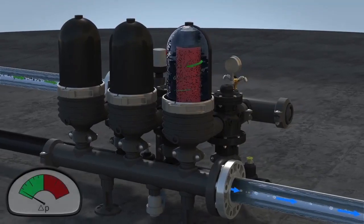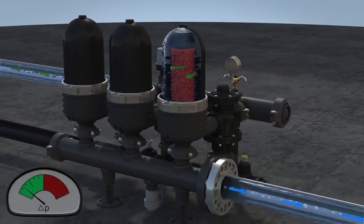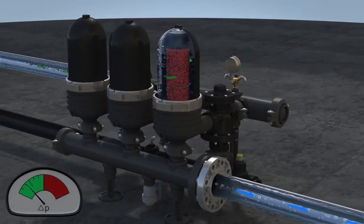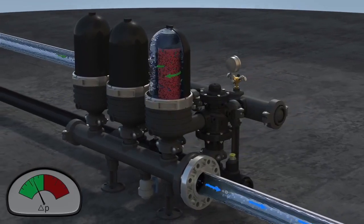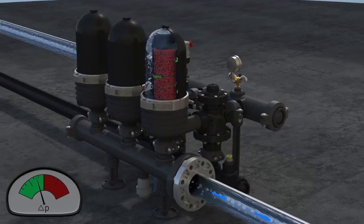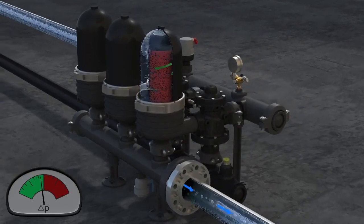The gradual buildup of particles on the discs causes a pressure differential to develop across the system. At a preset level, indicated by the red zone, a signal from the PD switch starts the self-cleaning cycle.